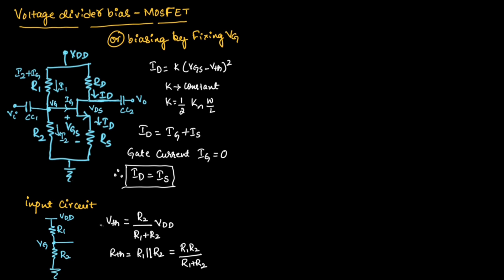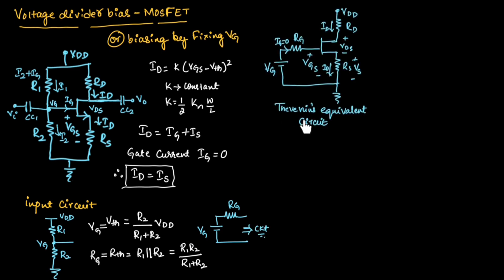So Thevenin's voltage is nothing but Vg voltage across gate and Thevenin's resistance is nothing but Rg which is resistance across gate terminal. So instead of using this circuit across the input, we can use a single voltage source which is equal to Vg and a single resistance which is equal to Rg that will be connected to remaining part of the circuit. So this is the Thevenin's equivalent circuit after simplification of the input side.